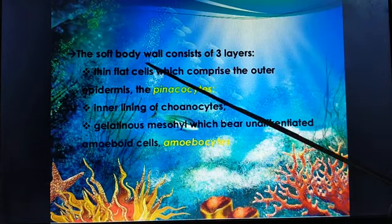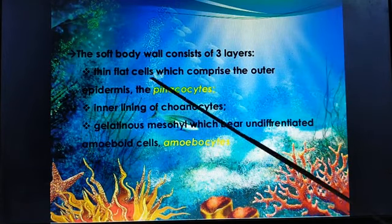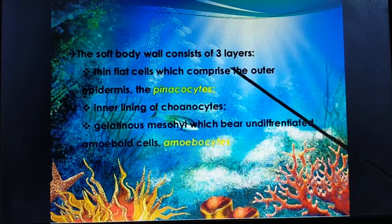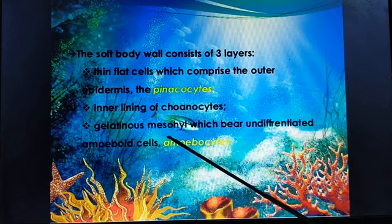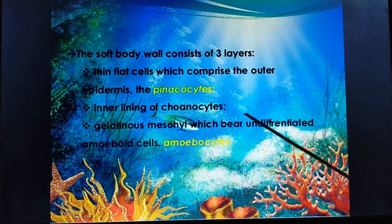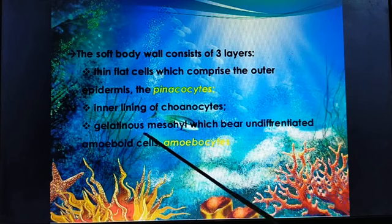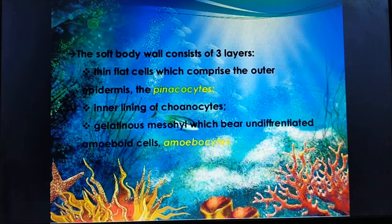The soft body wall consists of three layers: the thin flat cells comprising the outer epidermis — the ectoderm — called pinacocytes; the inner lining called choanocytes; and a gelatinous mesophyll. It is a diploblastic organism, meaning made up of two layers — outer ectoderm and inner endoderm. Between them, mesoglia cells are present, which are gelatinous. Those cells are called amoebocytes.